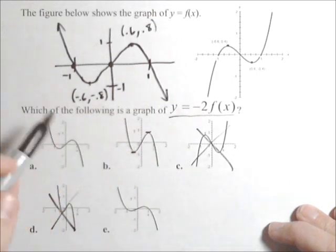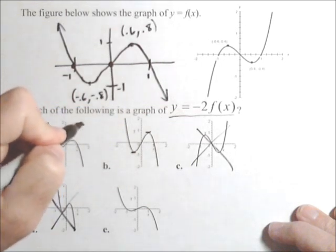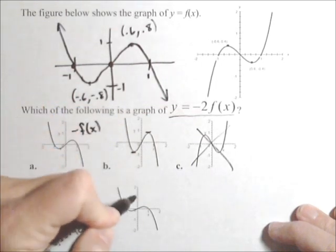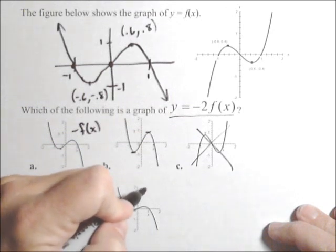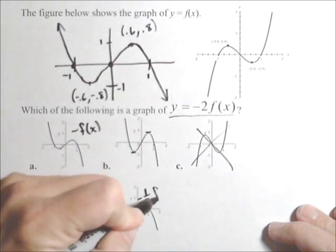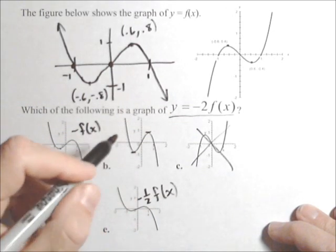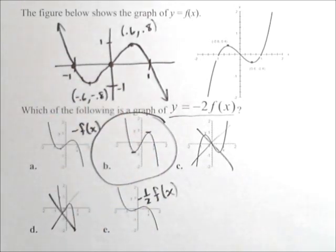And this one looks like it stayed about the same. So this is probably here, just -f(x). This looks like maybe about -1/2 f(x). So B is our most likely candidate.